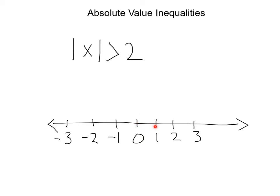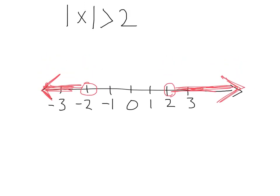So if we went to the right, we'd go 1, 2. We know that we're more than 2 spaces away, so let's go ahead and shade greater than. And 2 spaces from 0 also could be 1, 2 — negative 2 is also 2 spaces away from 0, but we are more than 2 spaces away, so we're all of these spaces out here. So how we would write the answer for this problem would be x is less than negative 2, or — remember we have this gap here — or x is greater than 2.